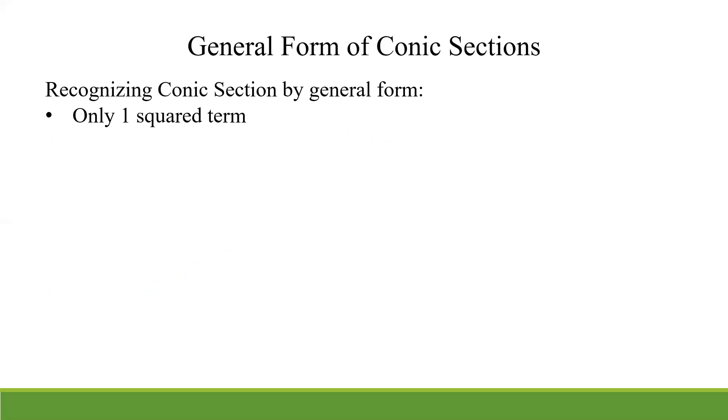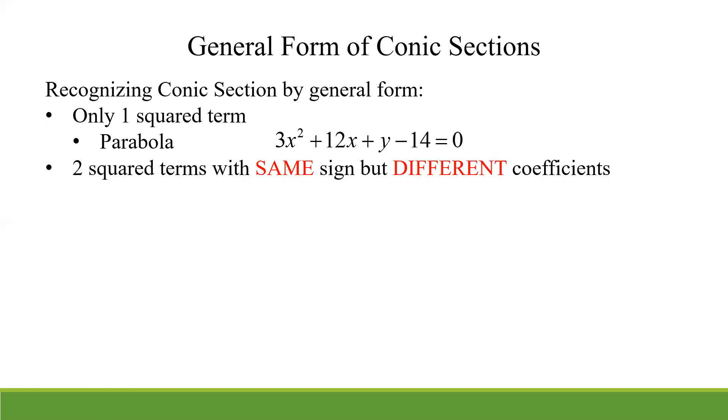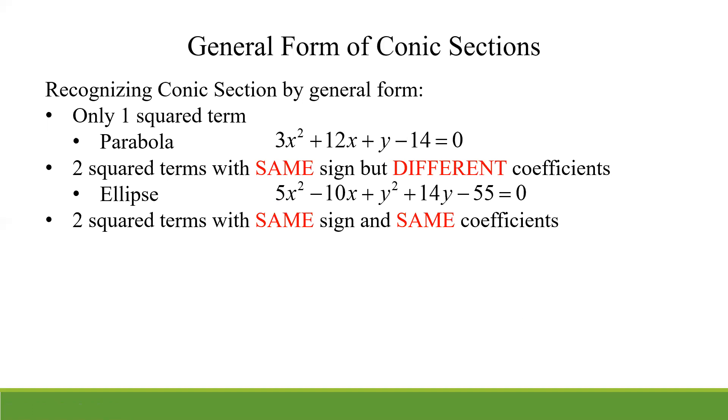Now, I told you I was going to give you kind of a shortcut for recognizing what you're going to have. And here's your shortcuts. So if you only see one squared term, I don't care which one it is, it's just an x squared or just a y squared, it's going to be automatically a parabola. What if you have two squared terms with the same sign but different coefficients? So something like this. So we have 5x squared and we got 10x squared, and we got y squared, but they have different numbers in front. Well, that's an ellipse.